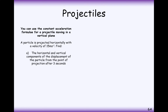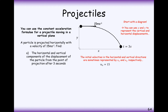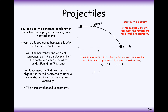Moving on to the next question: a particle is projected horizontally with a velocity of 15 metres per second. Find the horizontal and vertical components of the displacement of the particle from the point of projection after 3 seconds. We'll call the vertical change in distance y and the horizontal change in distance x. The initial speed in the x direction is 15, and the initial speed in the y direction is 0, since it's projected horizontally.